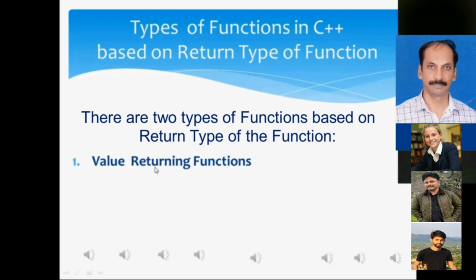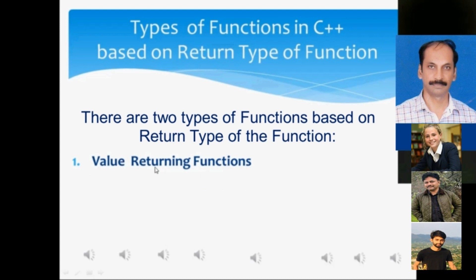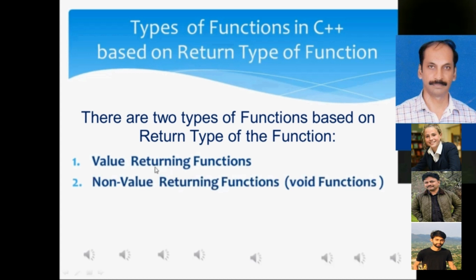The first type is value-returning functions. Value-returning functions are the functions that return a specific data value. The second type is non-value-returning functions, and non-value-returning functions are also known as void functions.